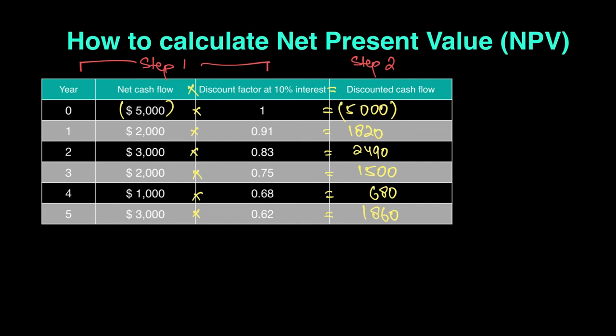Now we get to step number three. And step number three asked us to add up all the positive cash flows from our table. And the hint that I gave you was that these are all the numbers from year one onwards. So 1,820 all the way till 1,860. These are the numbers that we will add up. And when I add these numbers up, it gives me total number of 8,350. So this is what we've earned across these five years from this investment, taking in consideration that the value of money will go down by 10% and we'll end up earning 8,350.